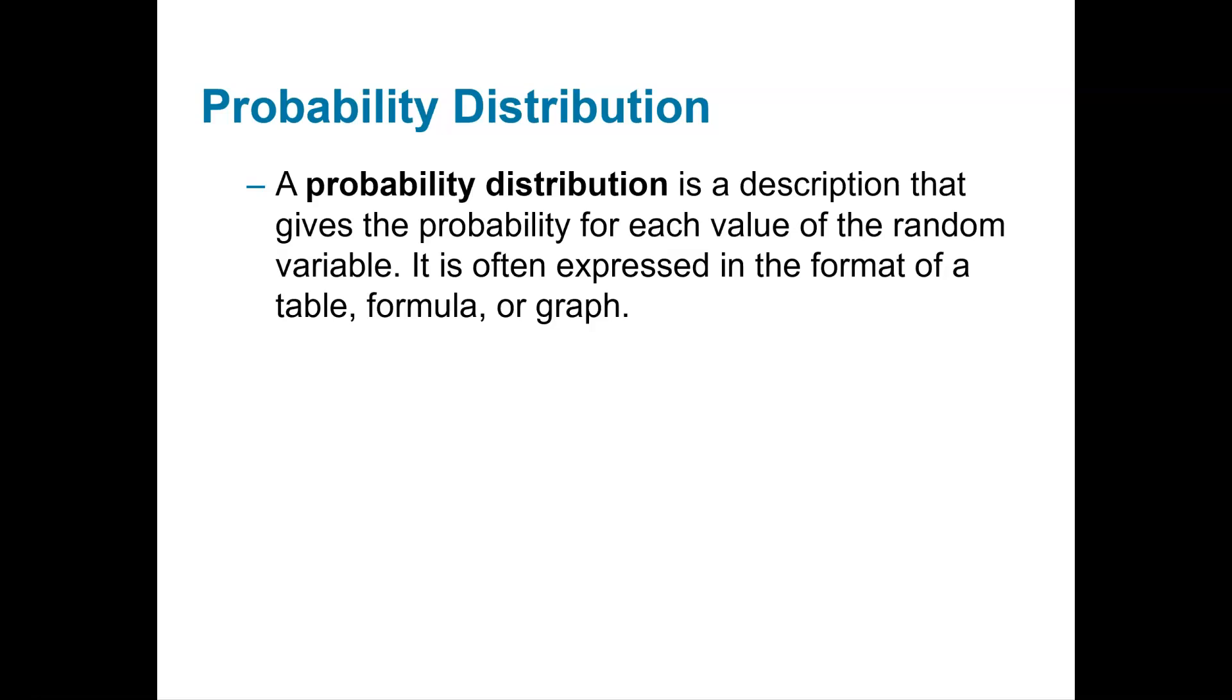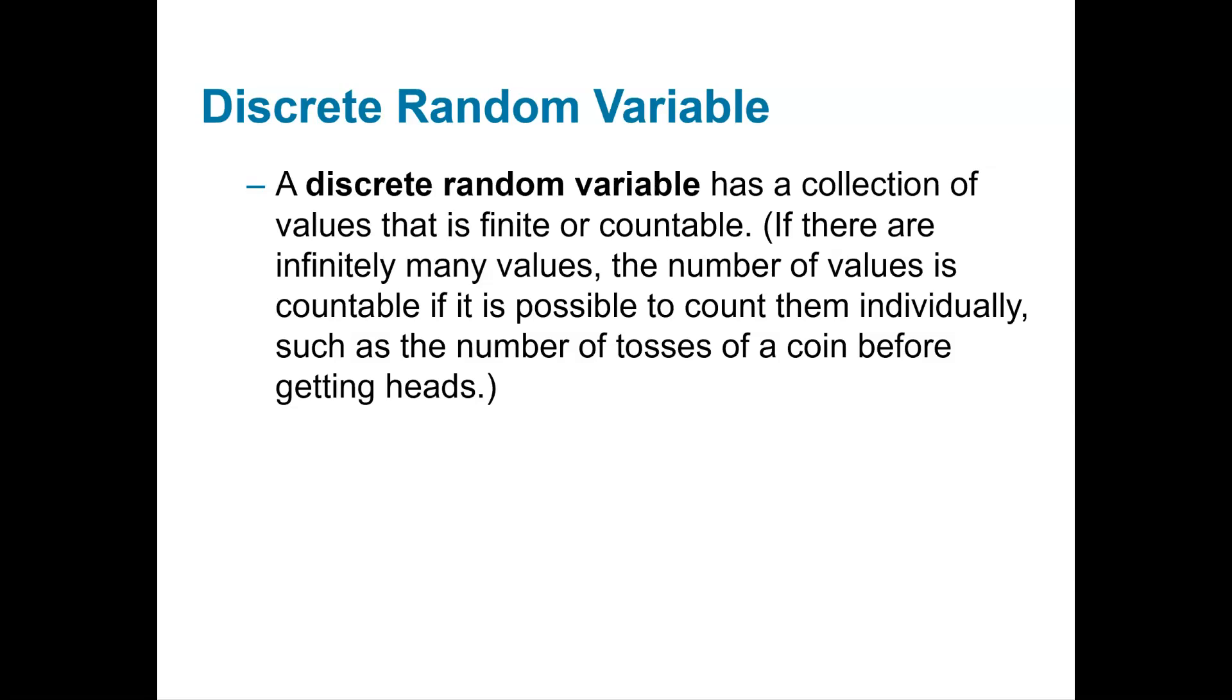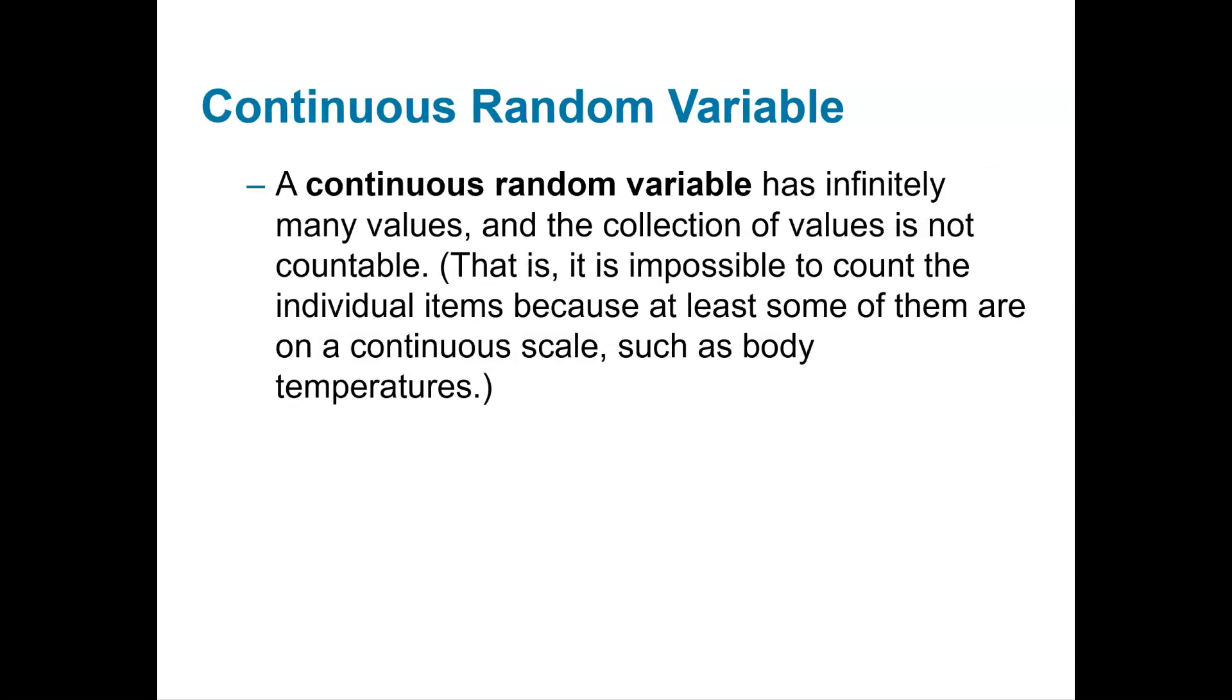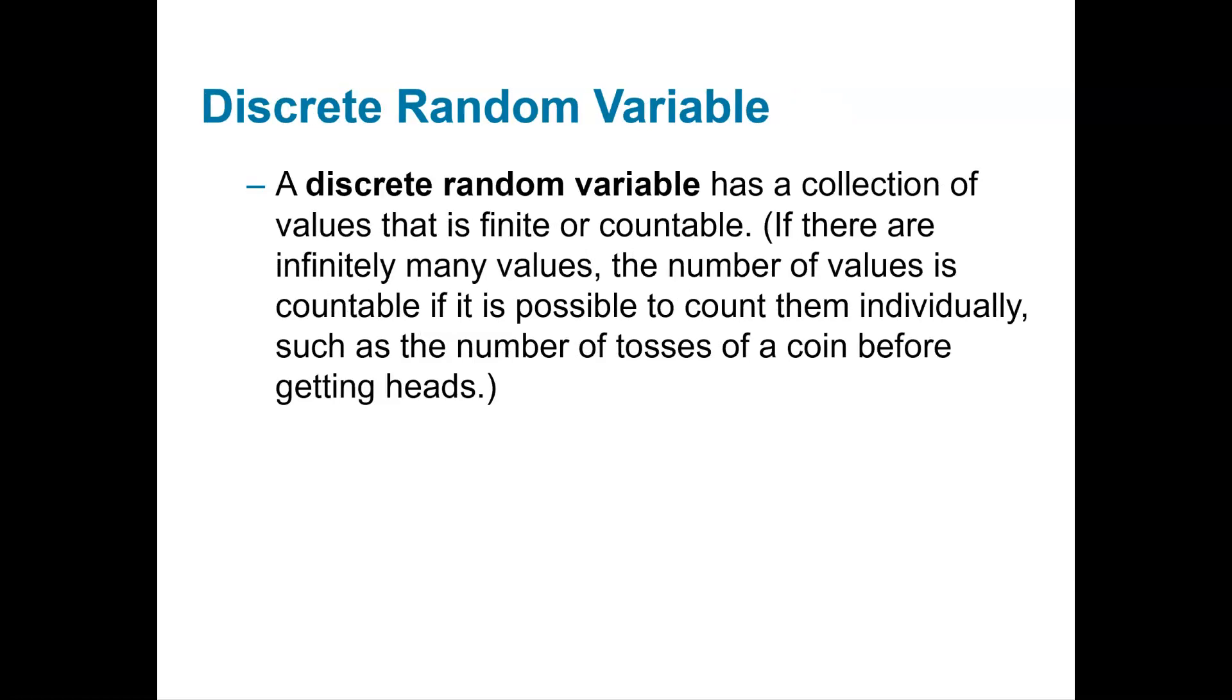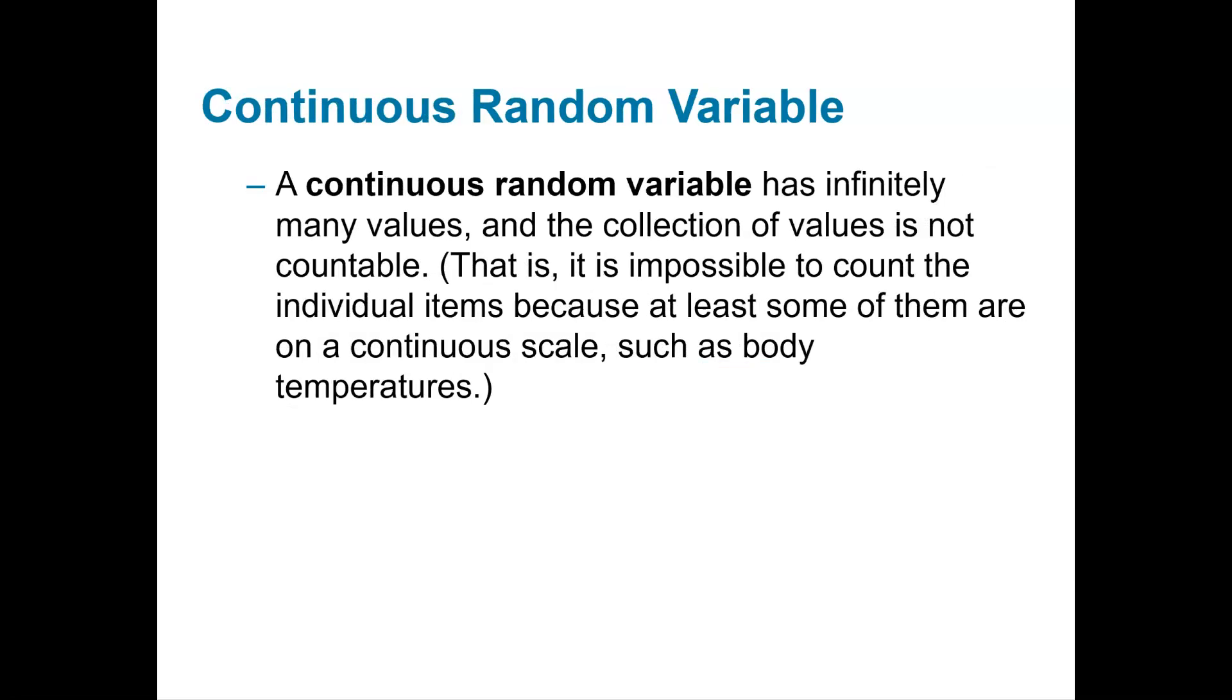There's two different kinds of random variables: discrete and continuous, which is vocabulary we've seen before. A discrete random variable is a collection of finite or countable variables, whereas continuous is infinitely many. A discrete would be your number of tosses of a coin, whereas continuous would be like temperature, where there's infinitely many options in between each count.